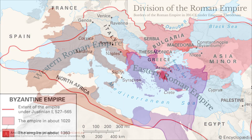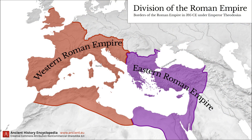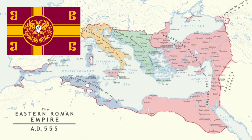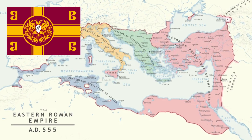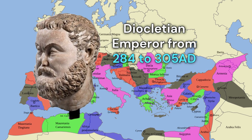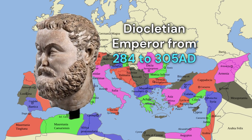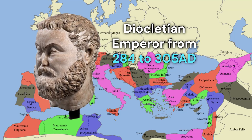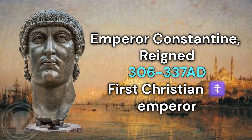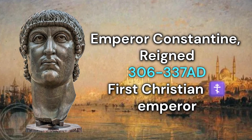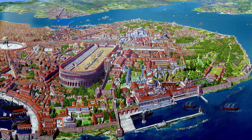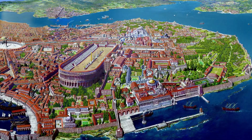The Byzantines were the continuation of the Eastern Roman Empire, which emerged after the administrative division of the Roman Empire into Eastern and Western halves in the late 3rd and early 4th centuries CE. Emperor Diocletian first divided the empire in 285 CE to make governance more efficient, and later Emperor Constantine the Great established Constantinople as the new imperial capital in 330 CE, transforming the small Greek city of Byzantium into the political and cultural center of the Eastern realm.